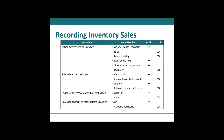And then if somebody actually does a return, we get to reverse out that refund liability because it's happening, and then we just give them back their money — crediting our cash. Then we get to restock the cost of that inventory they returned, so our inventory goes up, and then we draw down from that estimated inventory returns allowance account that we created.